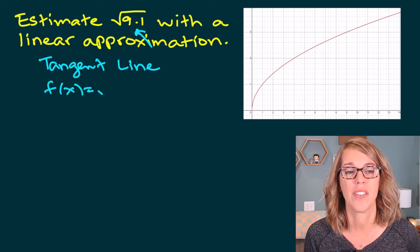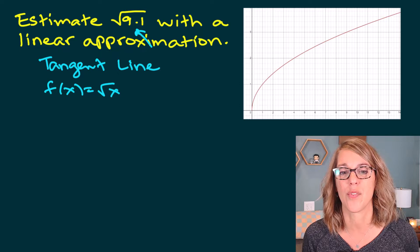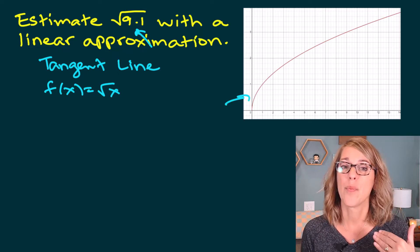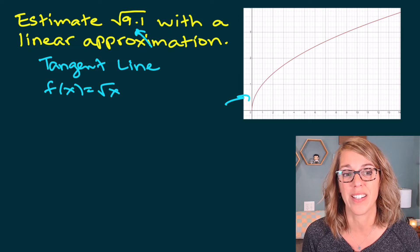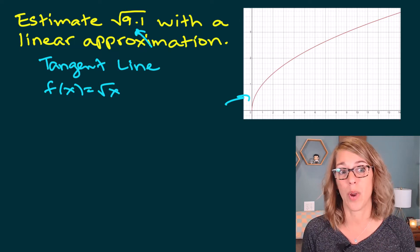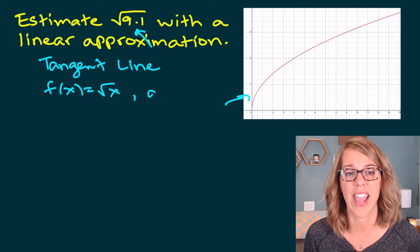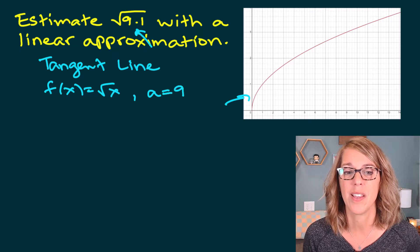So f(x) is equal to the square root of x, and I've got that graphed over here. I want a nearby point, a nice point that's easy to evaluate. And the nearest perfect square would be 9, so we're going to let a, the point of tangency, be equal to 9.